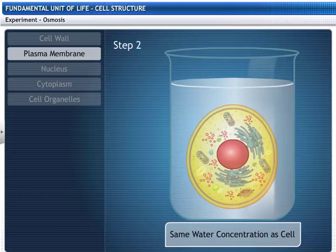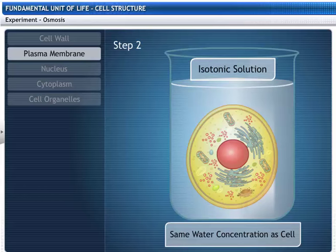If the medium has the same water concentration as the cell, there is no net movement of water through the membrane and the cell stays the same size. Such a solution is known as an isotonic solution.